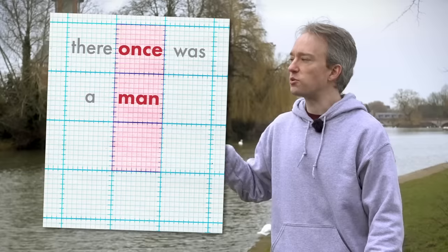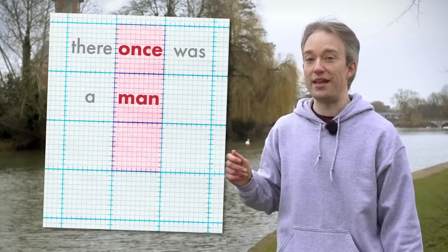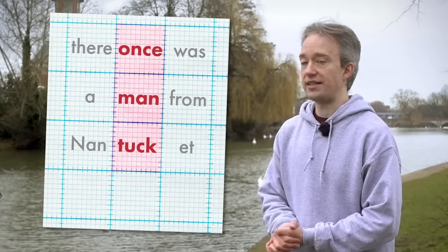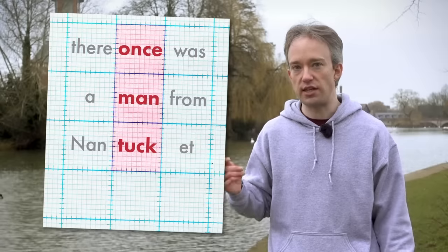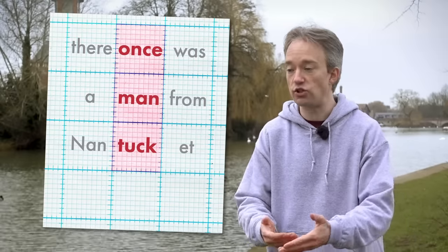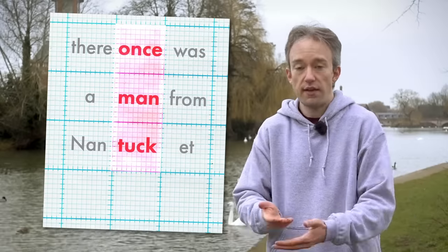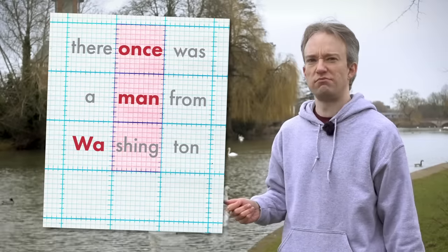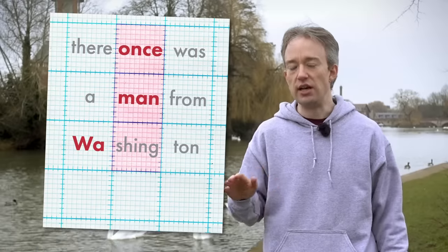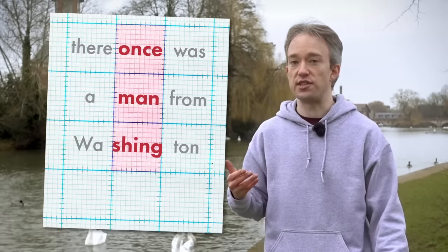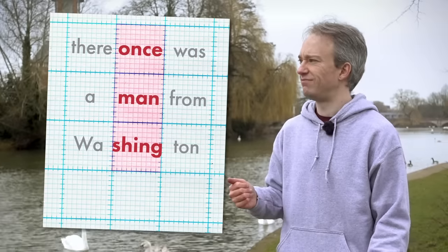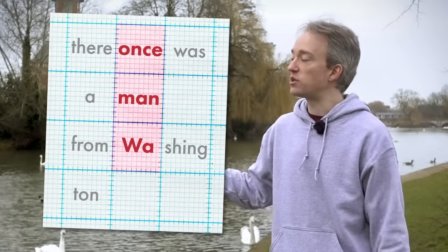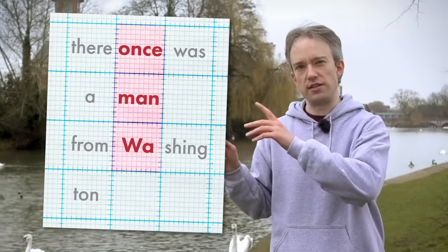Limericks. There once was a man from… well, from where? In increasing order of rudeness, he might be from Leeds, or Madras, or Nantucket. But the number of syllables in those names doesn't matter. You just make sure that the one stressed syllable is in the right place, and they all sound fine. But you can't have 'there once was a man from Washington.' It doesn't quite sound right — the lexical stress is a little bit early, and you can't move that stress later because it sounds worse to say 'there once was a man from Washington.' Now the lexical stress is wrong. For a limerick, the lexical stress has to land on the beat. Now, there is a solution: 'there once was a man from Washington.' It's a little bit clunky, there's a pause in there.